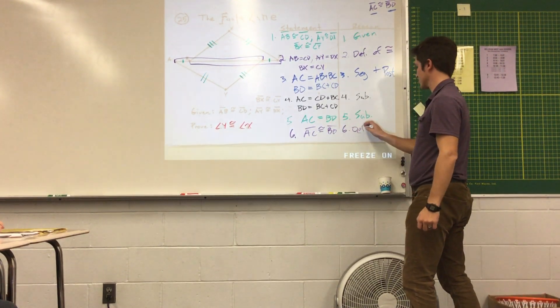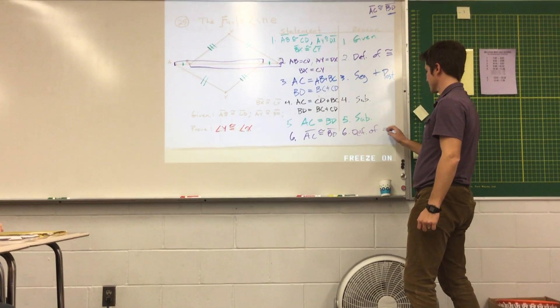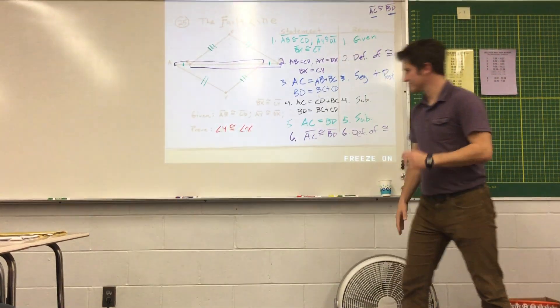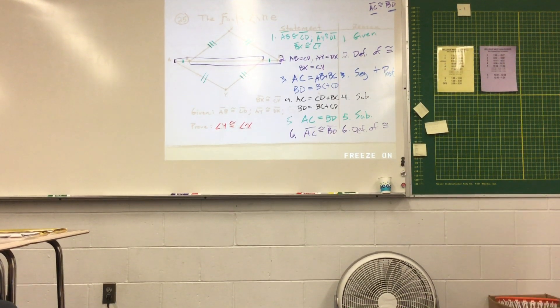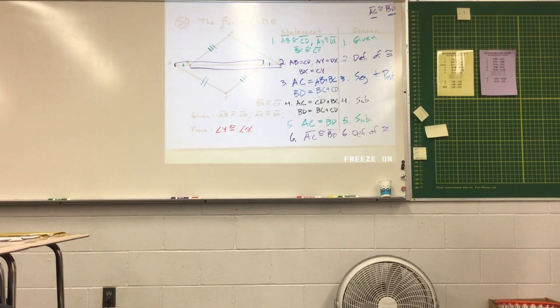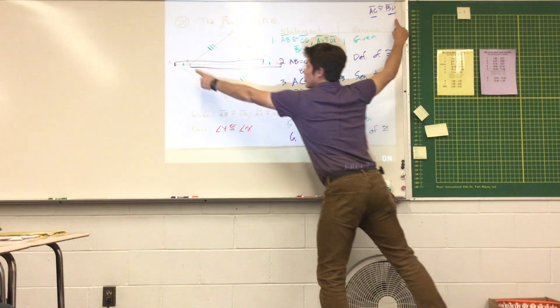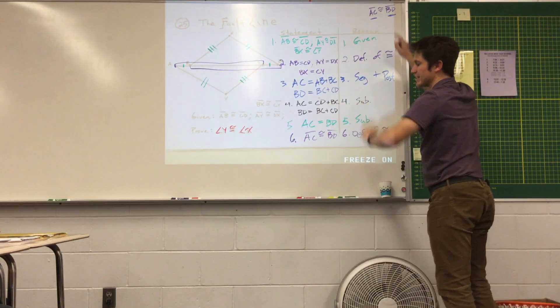This is why they pay me the big bucks. That means they're congruent. Oh my gosh. Big bucks. I've accomplished my first goal, which was showing that AC is congruent to BD.